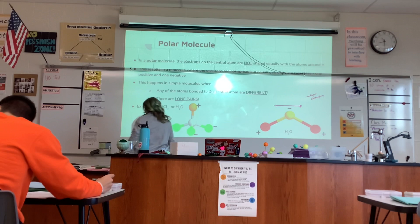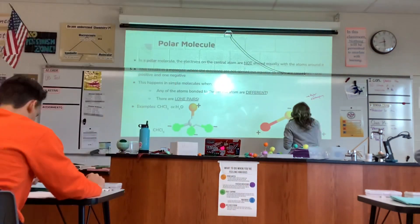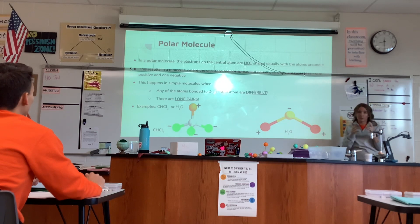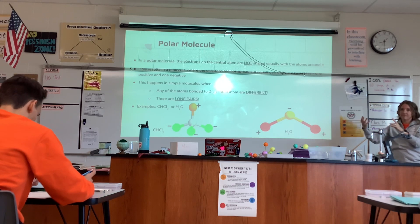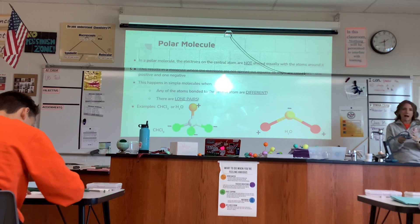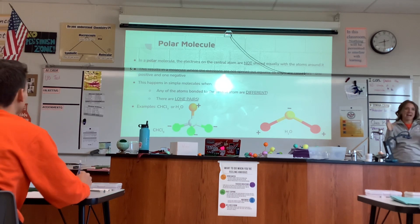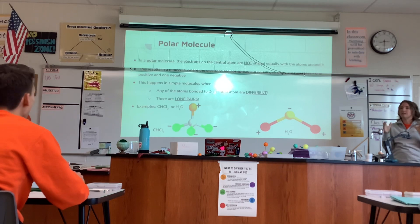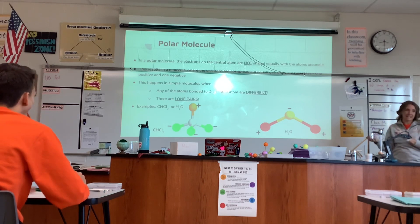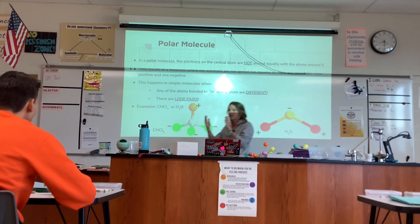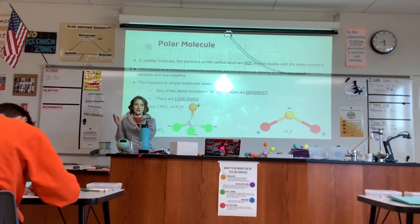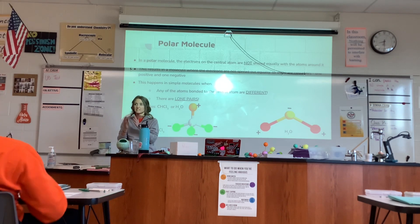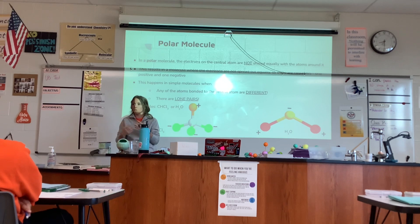To be polar, you have to be able to say one side is positive and one side is negative. If charge is distributed throughout, it's non-polar because it doesn't have distinct sides. You need a very distinct positive side and a very distinct negative side. In our progression: we start with Lewis structures, then look at 3D shape, then polarity. You have to think in 3D to determine whether something is polar or not.